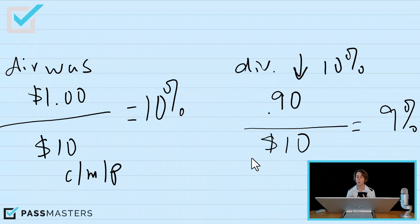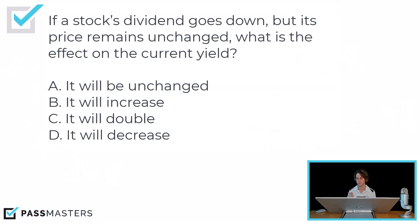You can always double-check with your calculator: $0.90 divided by $10 is 0.09. So what is the effect on current yield? It will be unchanged, increase, double, or decrease? The correct answer is: if the dividend goes down but the current market price stays the same, the current yield will decrease.